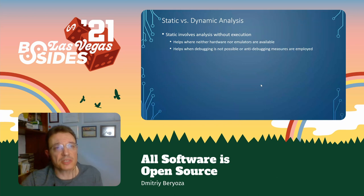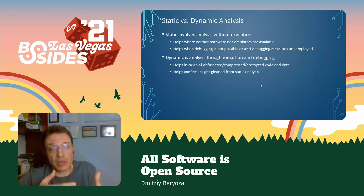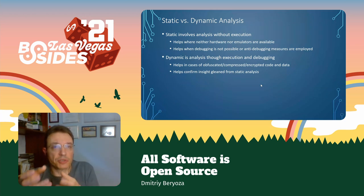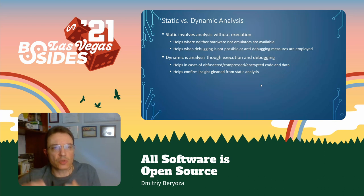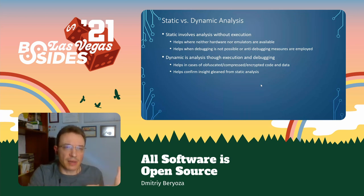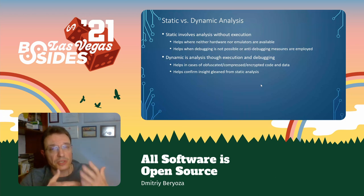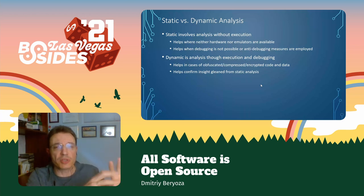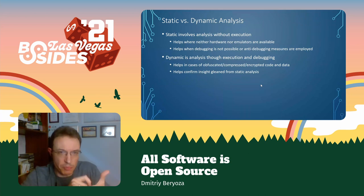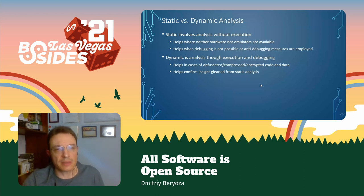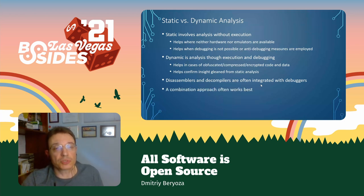You can also do static analysis versus dynamic analysis. Static analysis involves just looking at the code — it's useful when you don't have hardware or emulators available to run the code, or when debugging is not possible. That's balanced by dynamic analysis, where you do reverse engineering through execution and debugging. It helps in cases where code is really obfuscated, compressed, or encrypted. They really go hand in hand — disassemblers and decompilers are often integrated with debuggers, and the combination approach often works best.